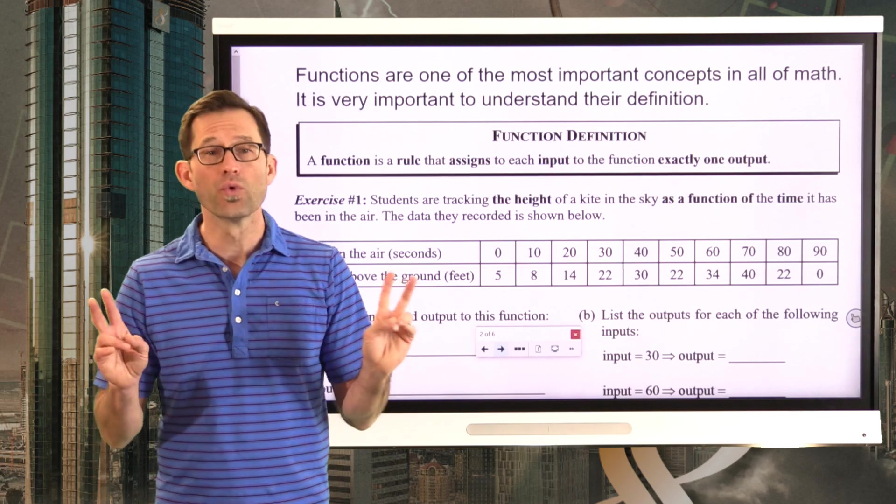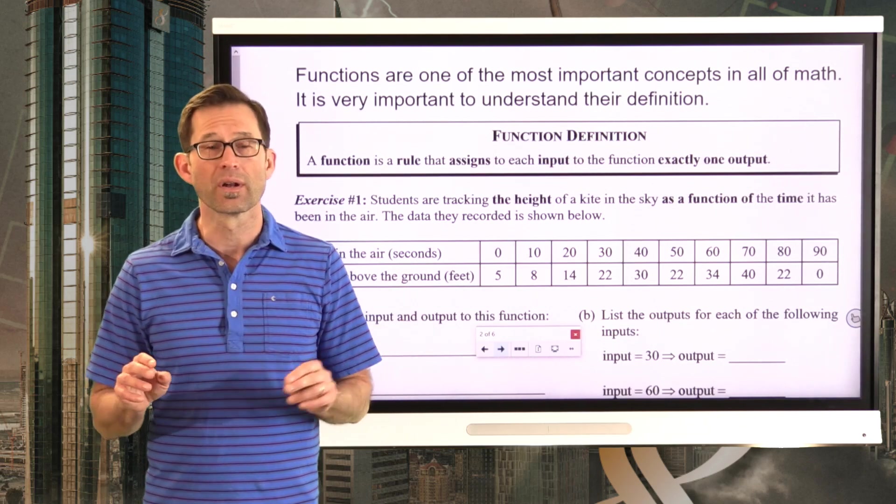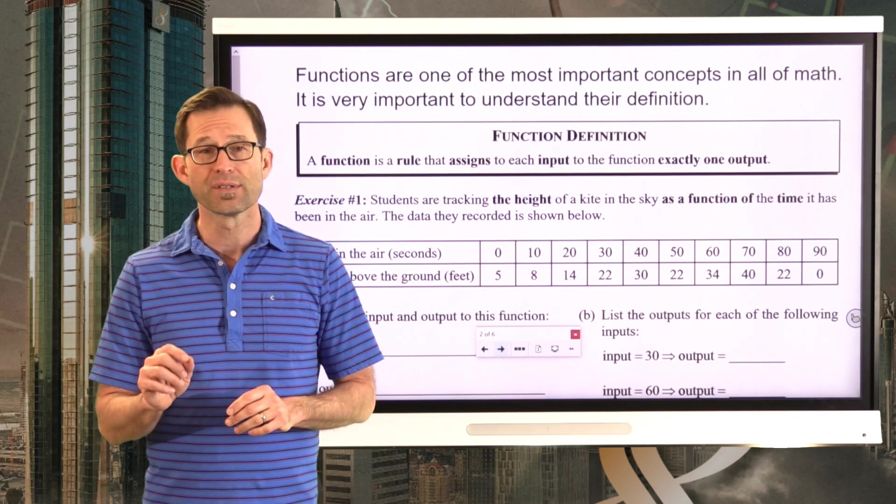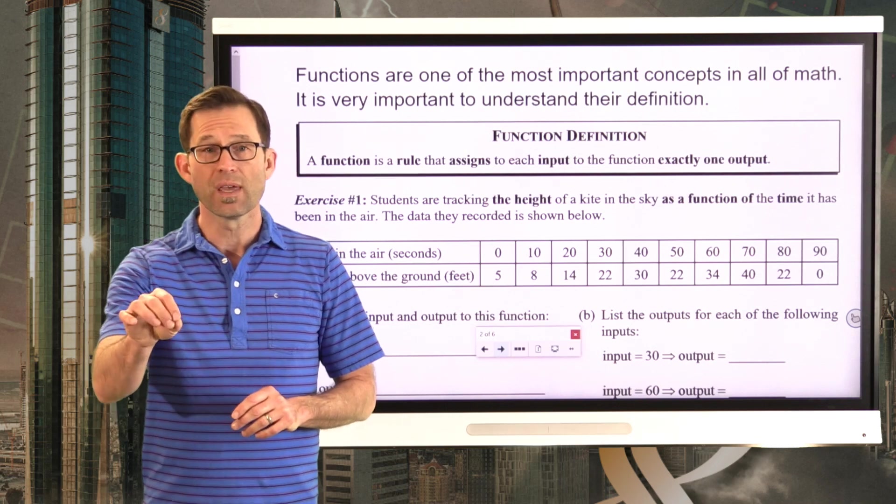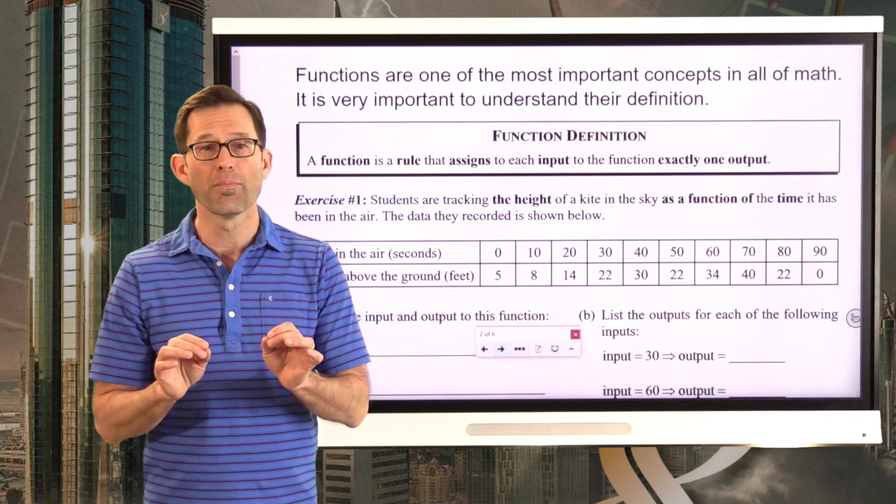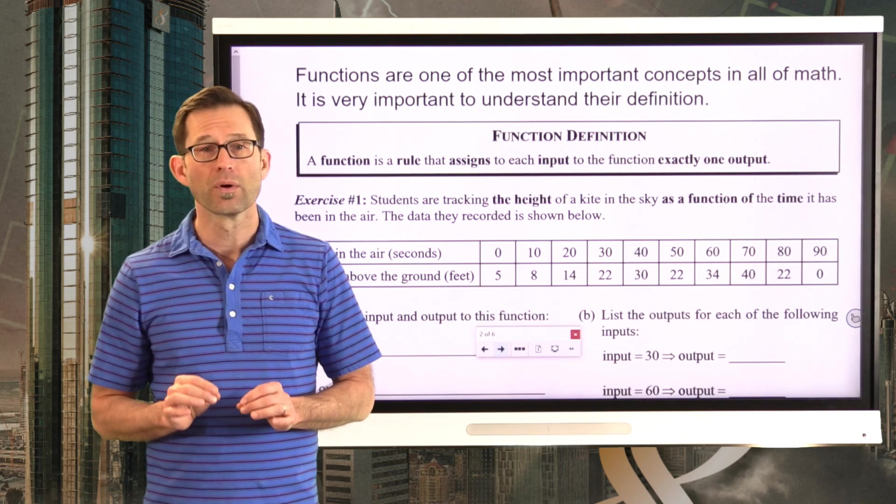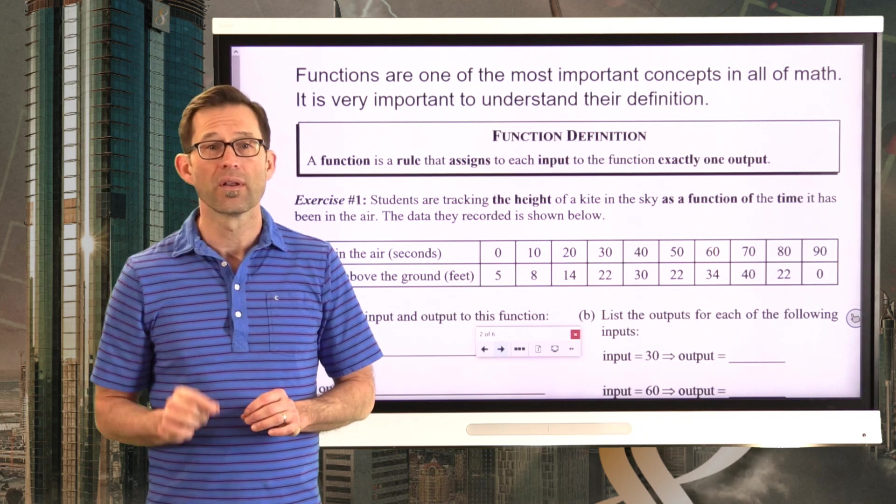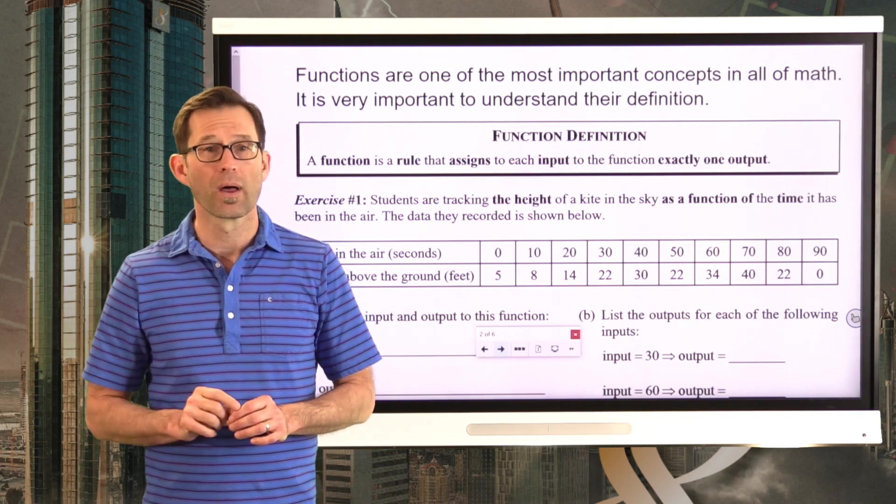Now these rules are going to take many different forms. But the idea is very simple. An input goes in and a single output comes out. In other words, it's like I put the quarter into the gumball machine, one gumball comes out. Not two, not three, not four.